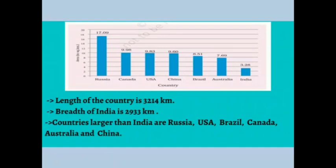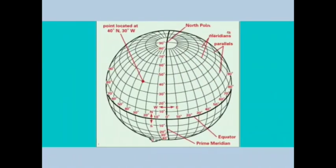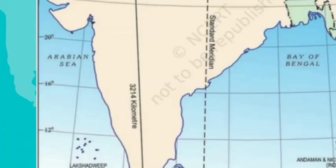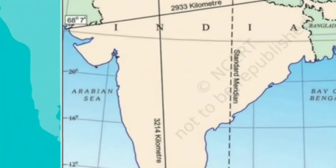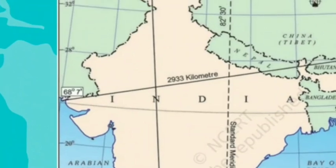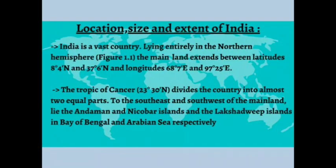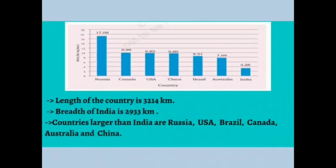The six countries larger than India are Russia, USA, Brazil, Canada, Australia, and China — making India the 7th largest. You can study this graph from your textbook for area-wise comparison. The length of the country from north to south is 3,214 kilometers and the breadth from east to west is 2,933 kilometers. All these figures are important for understanding the size and location of the country.